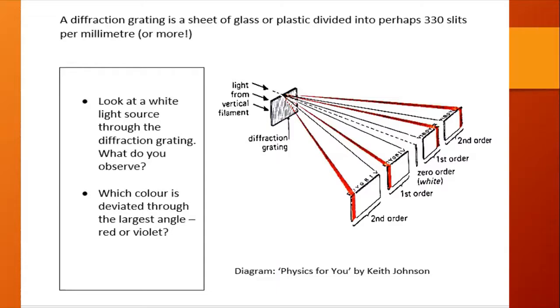For each order we say n equals one for the first order, n equals two for the second order and so on. But notice that red light in each spectra is deviated through the largest angle and violet through the smallest angle. And from the diagram I see a little eye which could stand for indigo, but does indigo actually exist?